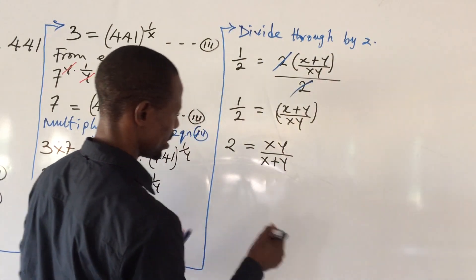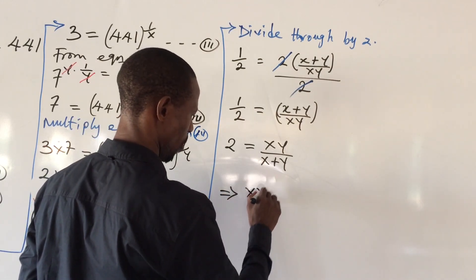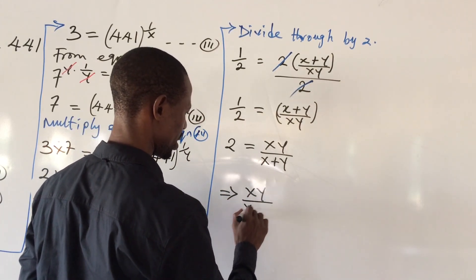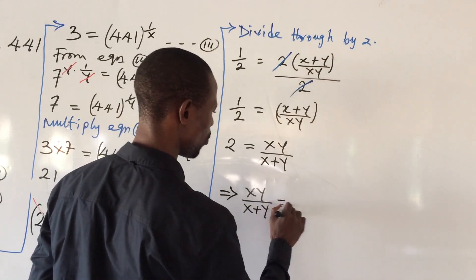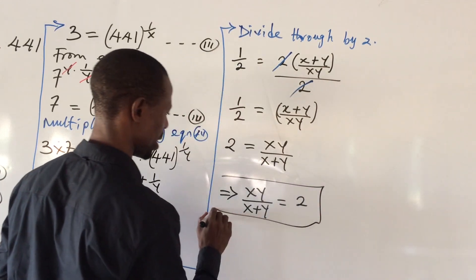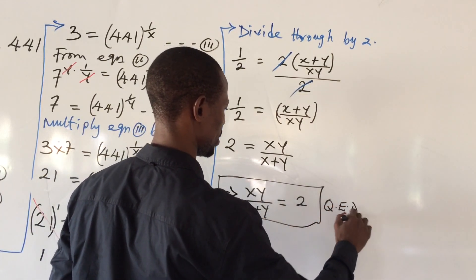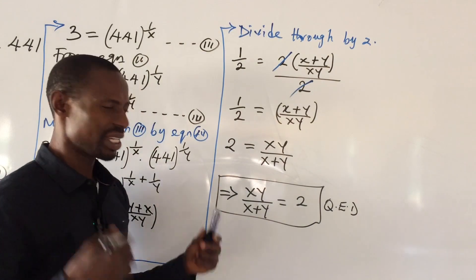So if we have this, this thus implies that your xy all over x plus y equal to 2. And this is what we are asked to look for. Q.E.D. Very simple.